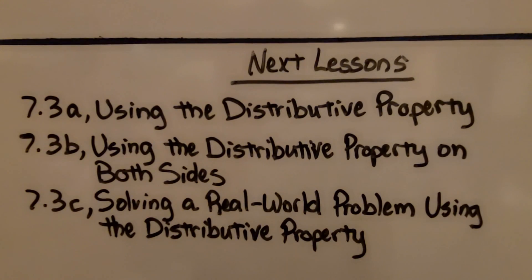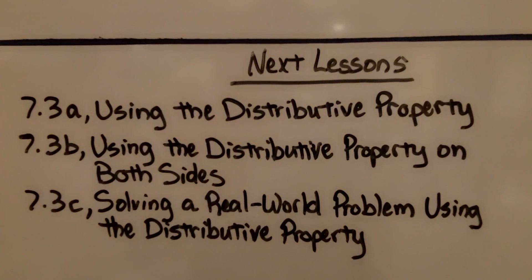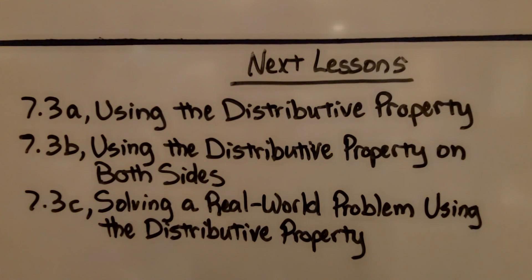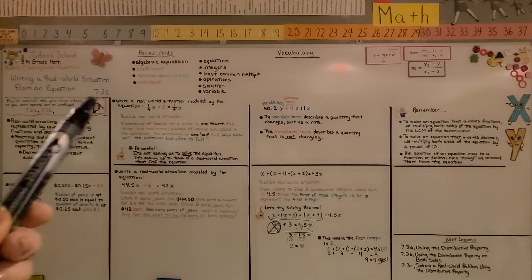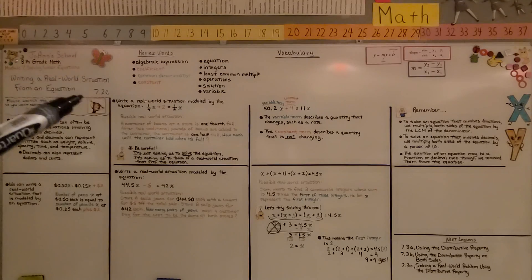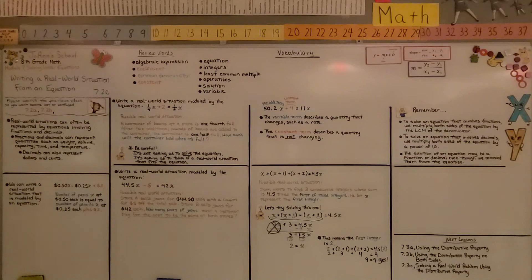We're moving on to lesson 7.3, and we're going to be discussing using the distributive property. If you're still very confused about how to write a real-world situation from an equation, look at the examples in your textbook. Change it a little bit. If it's talking about rice, use beans like I did here. And maybe change the numbers a little bit and make sure that the equation makes sense. I hope you have a great rest of the day, and I hope you join me for the next lesson. Bye.